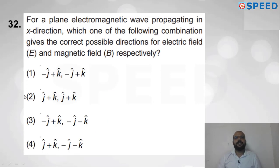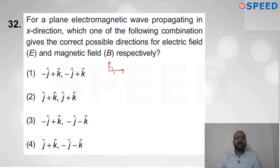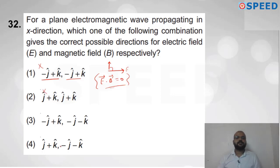Question thirty-two: For a plane EM wave propagating in the X direction, find the correct combination of electric and magnetic field directions. E and B must be perpendicular to each other — their dot product must be zero. Checking option 1: fields are parallel — not possible. Option 3 gives perpendicular fields with zero dot product. Option number 3 is correct.